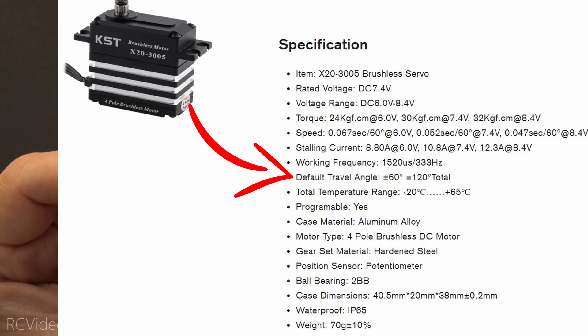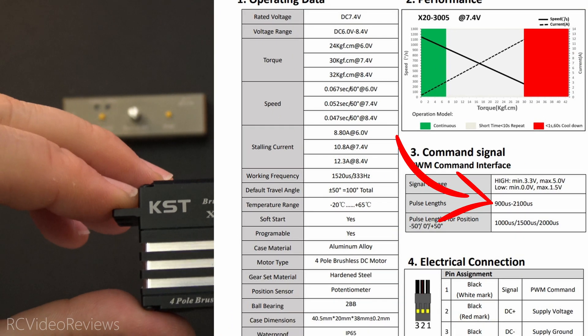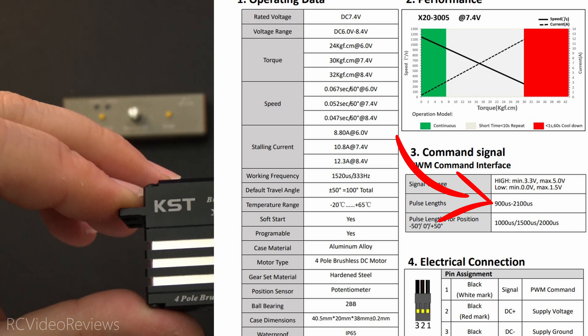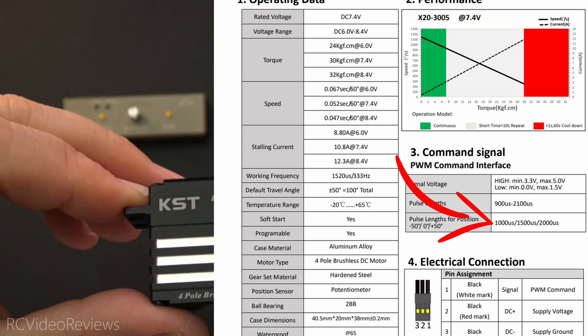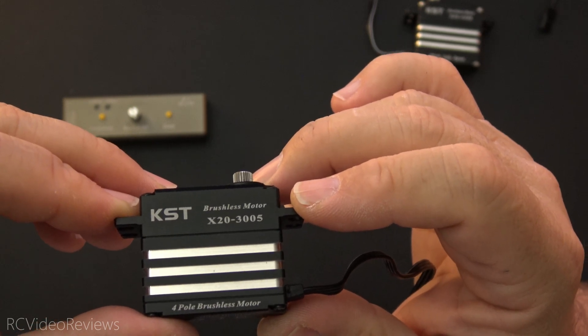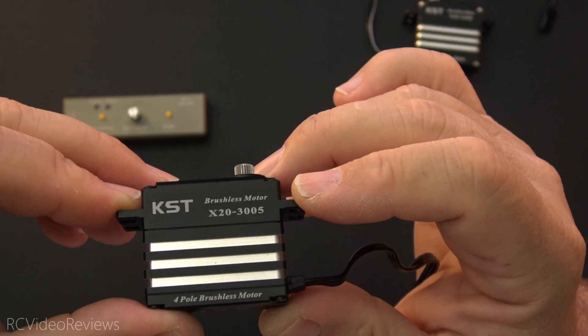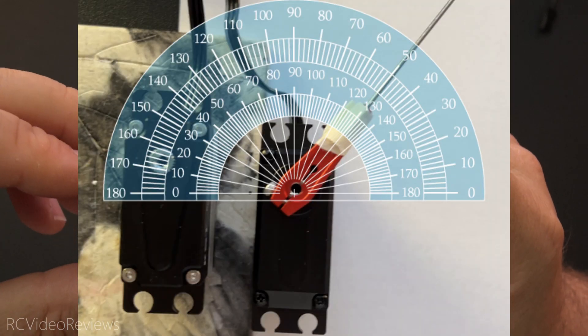Now, the website does say 120 degrees, 60 degrees plus and minus, but according to my measurements, I'm only seeing 50. The book does show pulse lengths of 900 to 2100 in the guide, with pulse lengths of 1,000, 1,500, and 2,000 for the min, center, and max. So I'll experiment a little bit with that, but my initial measurements using a 1,000 microsecond low end and a 2,000 microsecond high end do indeed show up at 50 degrees plus or minus.